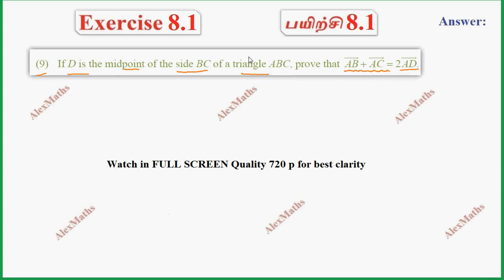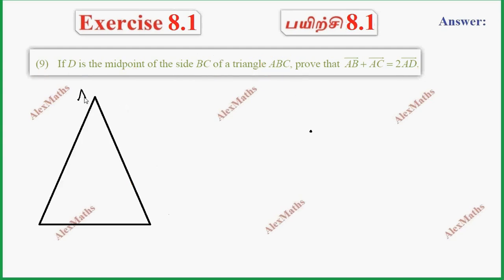So in triangle ABC, D is the midpoint of one side BC. Now we have AD joined. Now AB, BD — BC is the midpoint.